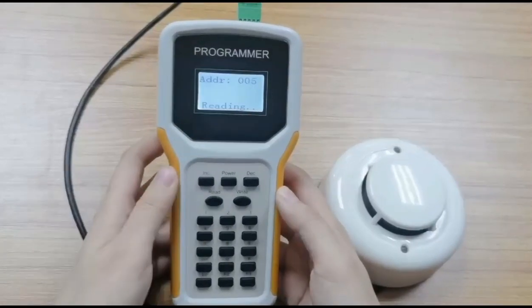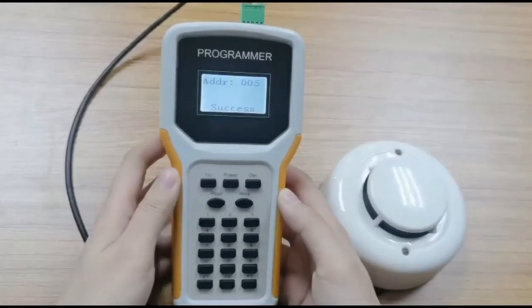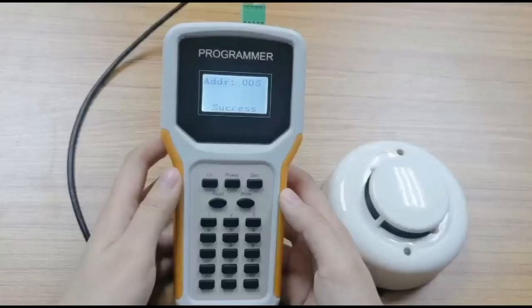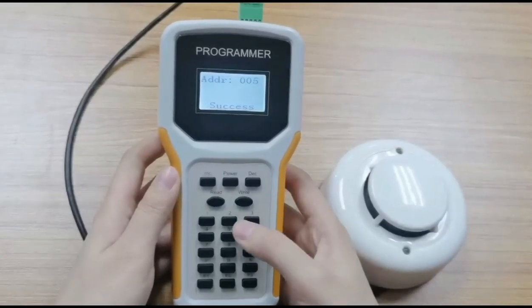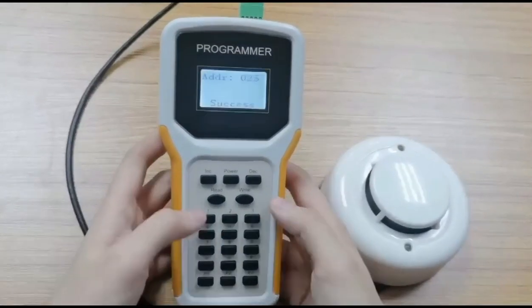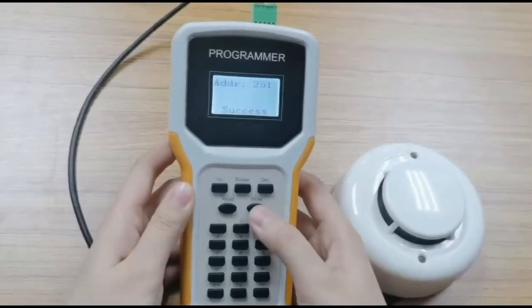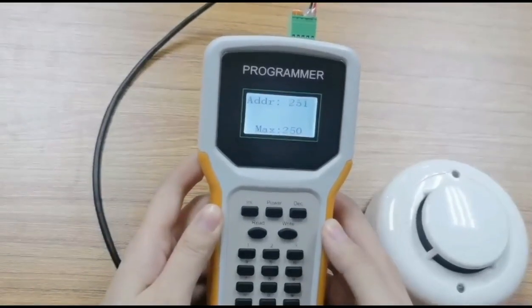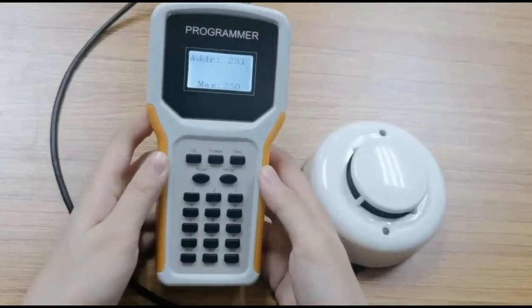Because our system has up to 250 addresses in each group, the maximum address is 250. It cannot write addresses over 250.